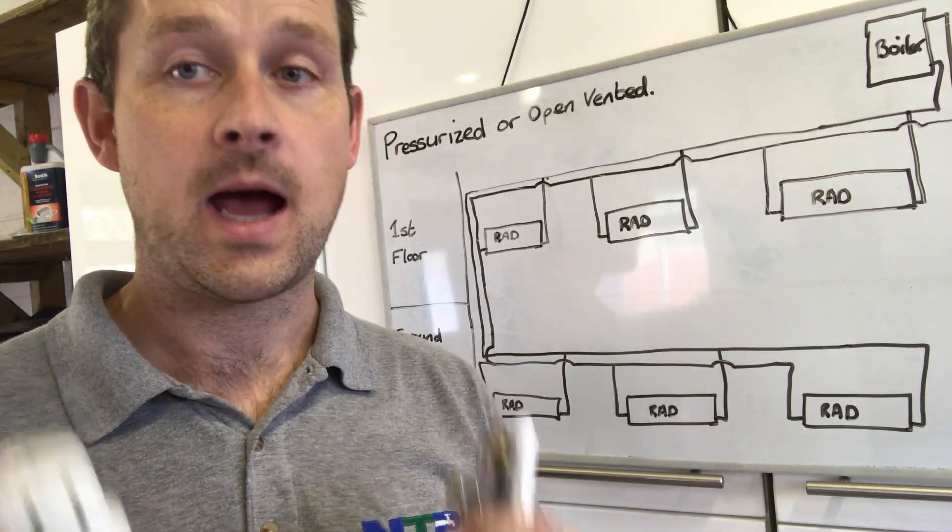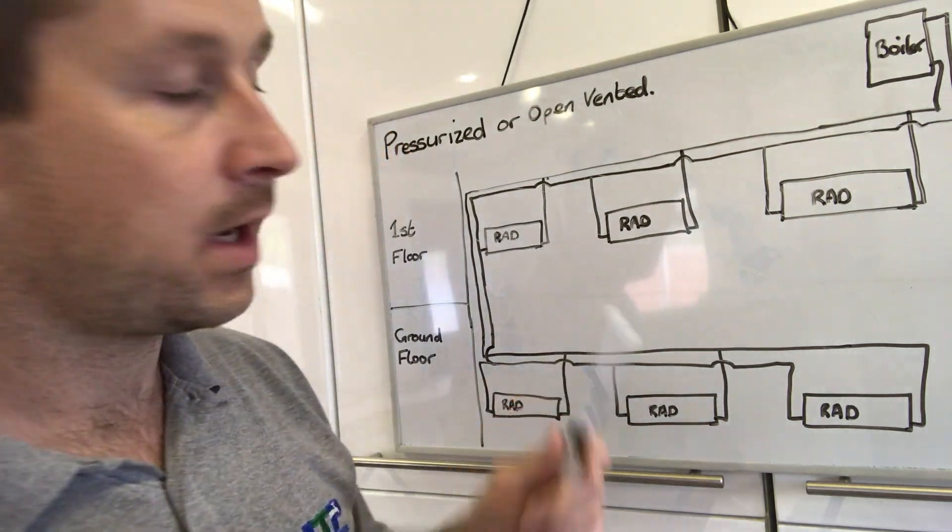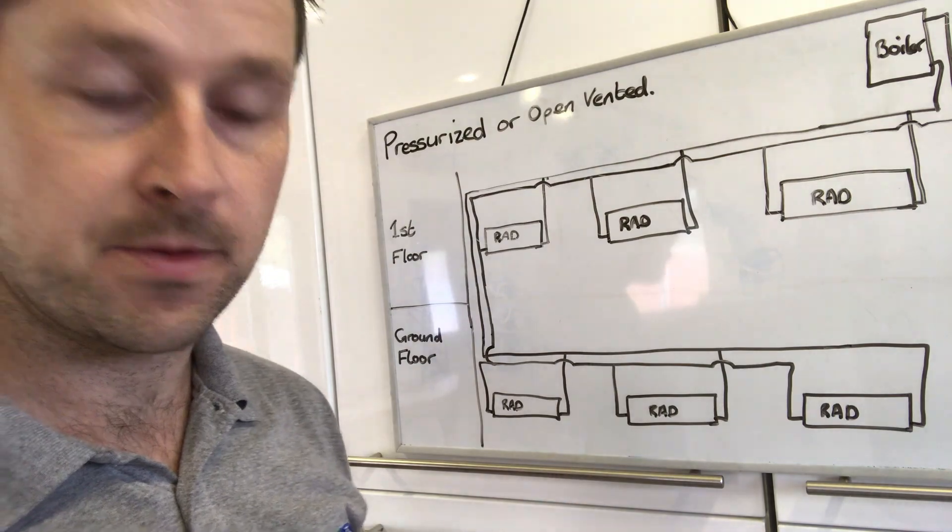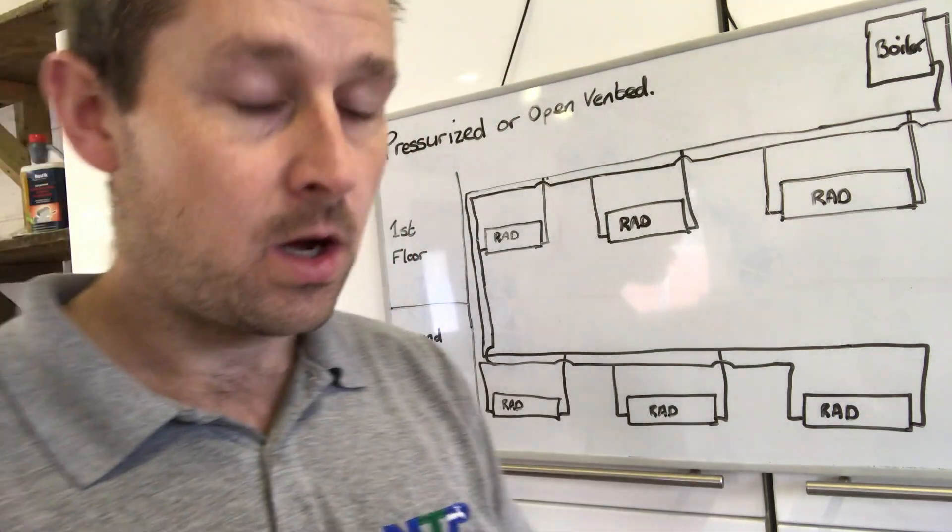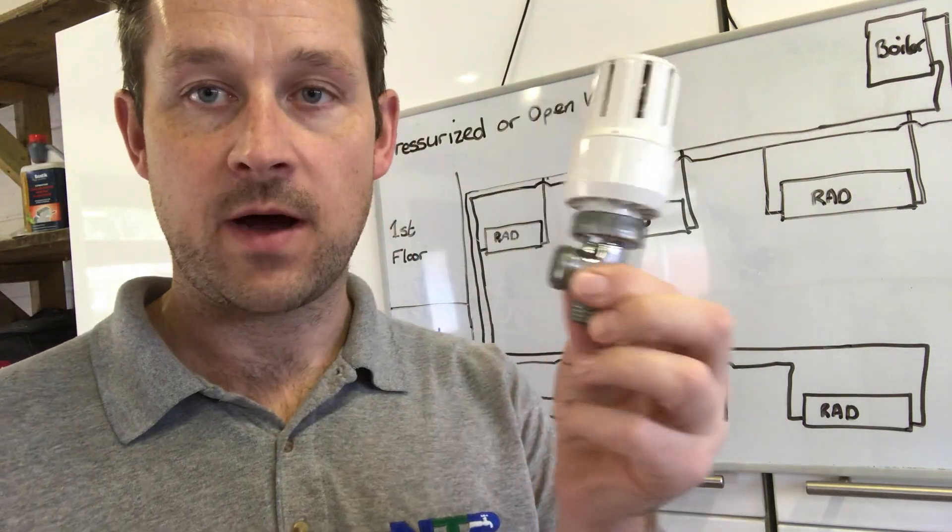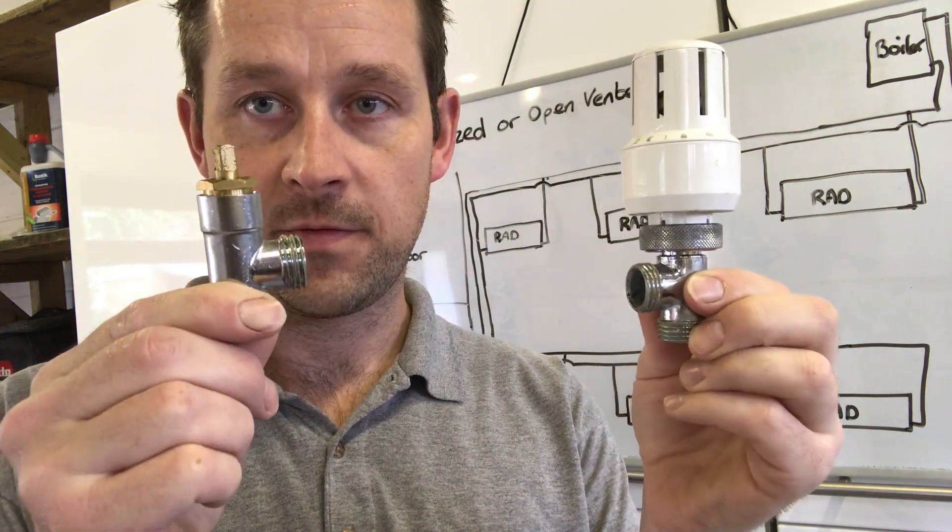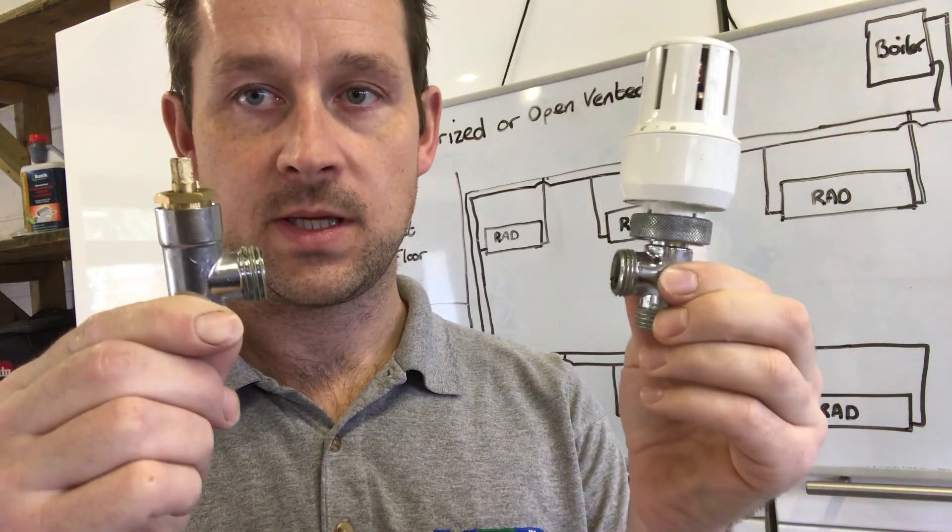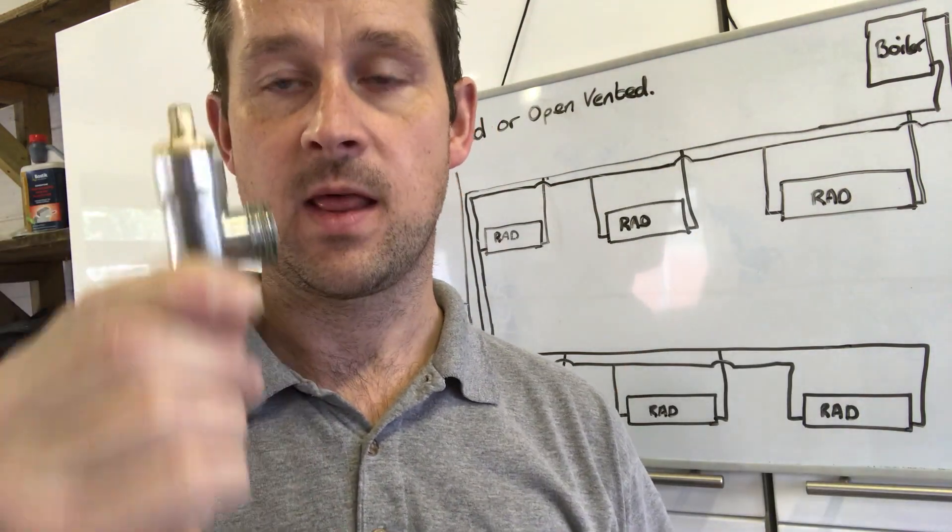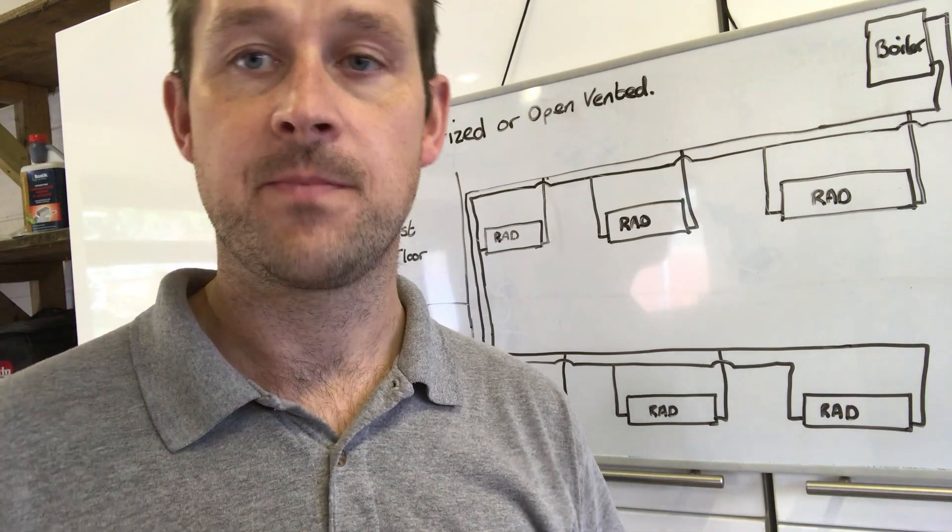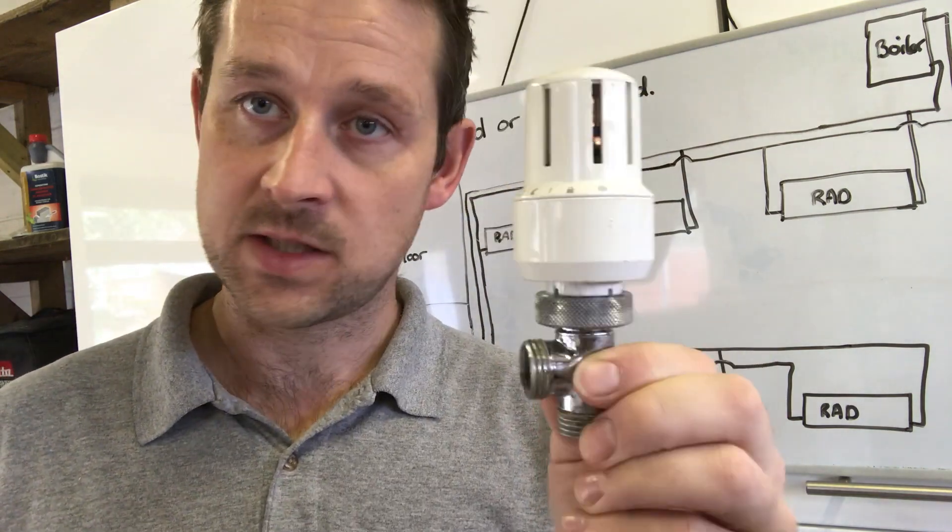Now we're down to how you balance your system. To keep things simple, this is your flow and your return loops. On each radiator you've got two valves: your thermostatic radiator valve and your lock shield valve. The point of this is the lock shield is for us plumbers to work with, not the homeowner. This one is for the customer to work with individually.